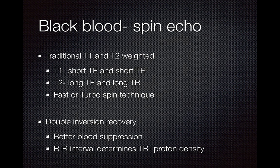Generally, these are fast or turbo spin-echo techniques. Currently in cardiac imaging, we're using a double inversion recovery pulse sequence. This is a variation on a traditional spin-echo pulse sequence which uses two inversion recovery pulses, leading to better blood suppression. One thing to note is that in cardiac imaging, the R-to-R interval generally determines the TR time, so these double inversion recovery images are generally more of a proton density weighted with a short TE and a long TR time.